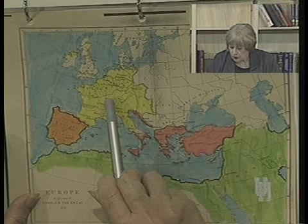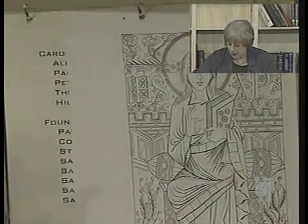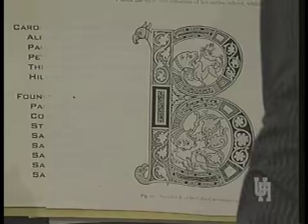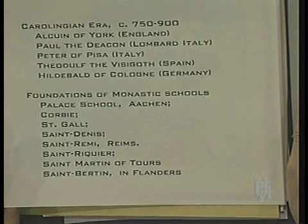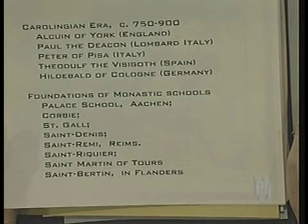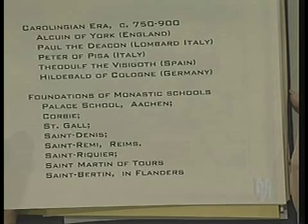Northumbria and Jarrow are visible on this map of the Carolingian Empire. The Carolingian era ran from 750 to 900, and Charlemagne gathered scholars from all over Europe at his court. Alcuin of York came from England, Paul the Deacon from Lombard Italy, Peter of Pisa from Italy, Theodulf the Visigoth from Spain, and Hildebald of Cologne from Germany. I'm just showing them to illustrate how diverse this was. Charlemagne plumbed the depths and found the greatest scholars all over Europe and brought them together.